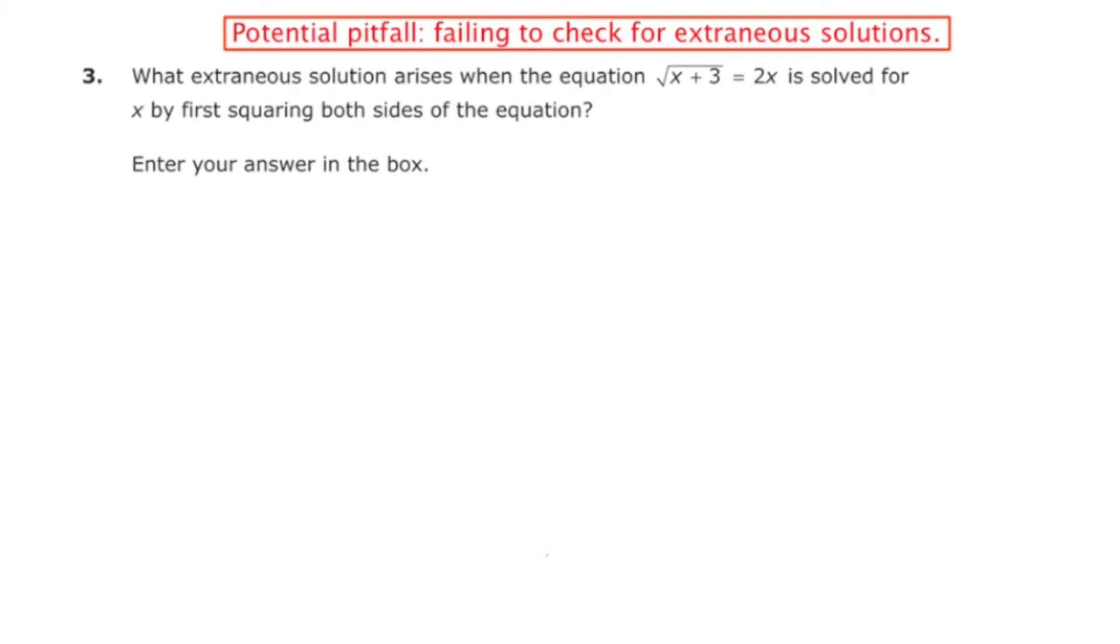So let me really quickly define for you what an extraneous solution is. That is a solution that occurs when solving a problem but doesn't actually check the originally stated problem. Whenever you're solving an equation in math, you're supposed to take your answers and check them to see if they're valid and that they work. Sometimes all the answers work, but there are occasions where one or more than one answer does not work. So that's what they're asking for here: which is the answer that doesn't work?